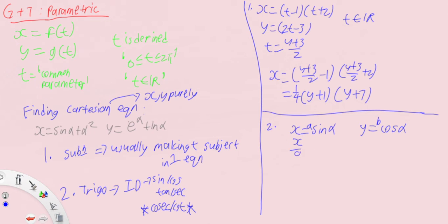As such, let's make that the subject. x/a gives us sin(α), y/b equals to cos(α). We then square both sides. So square, square, square, square, square, square.